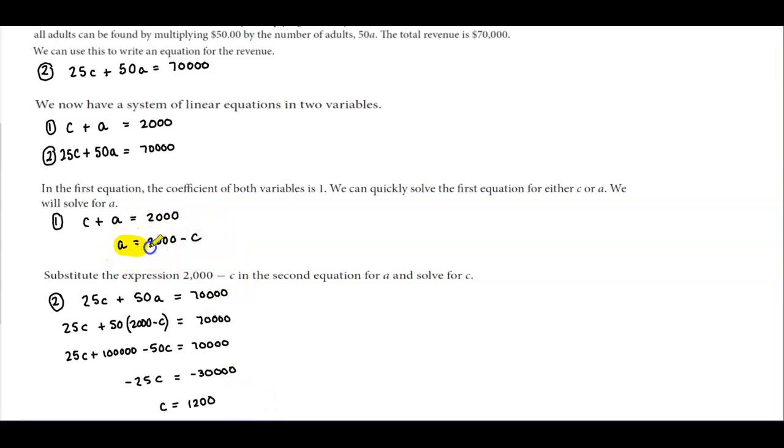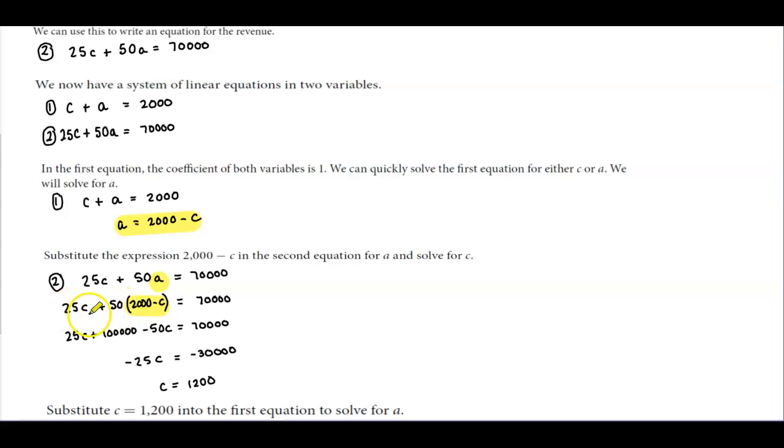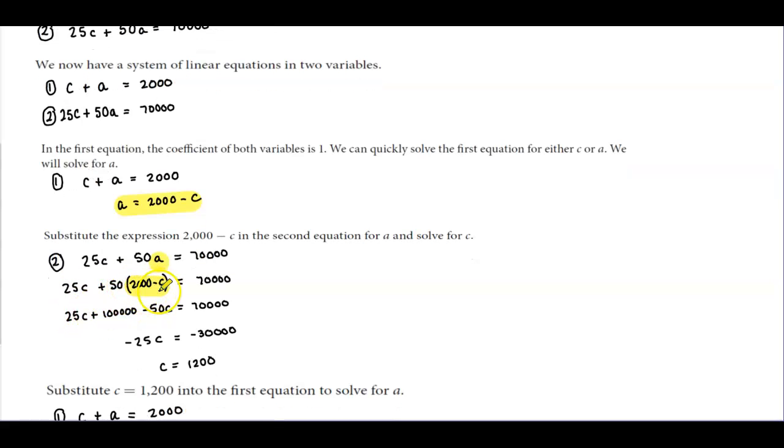We're going to substitute A = 2,000 - C into equation number two. Now we have 25C + 50(2,000 - C) = 70,000.